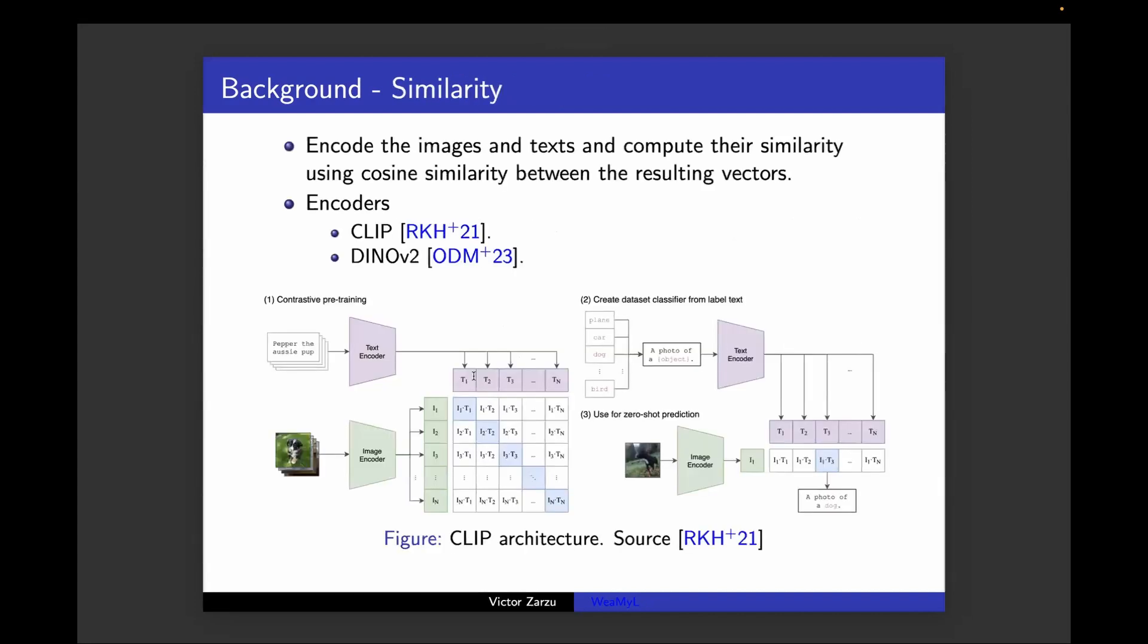Now for the task of prompt-based editing, you need to see how similar two images are to each other. This can be done using cosine similarity. If you have an image, you can encode it with CLIP, which is a model that knows how to encode images and text. You can encode images and text using CLIP, and after that you have a vector, and you can compute the cosine of these two vectors and get the similarity between two images, and also the similarity between a caption or description of an image and the actual image.